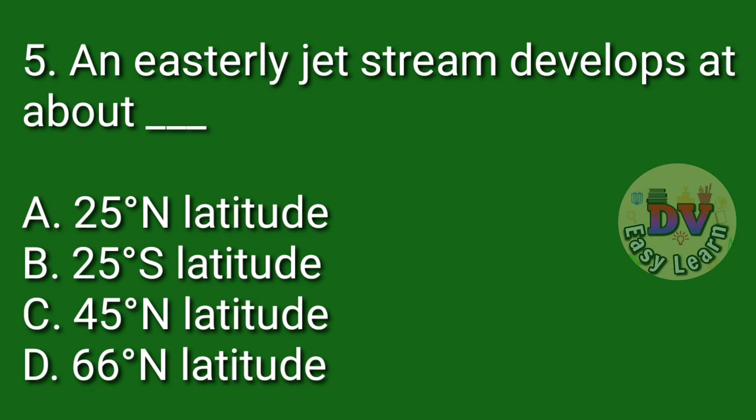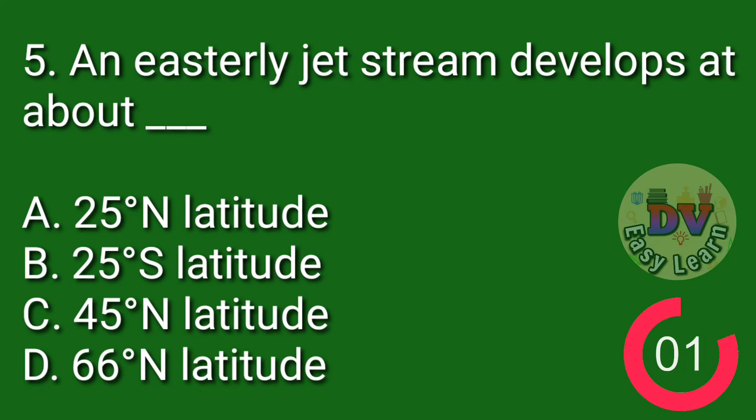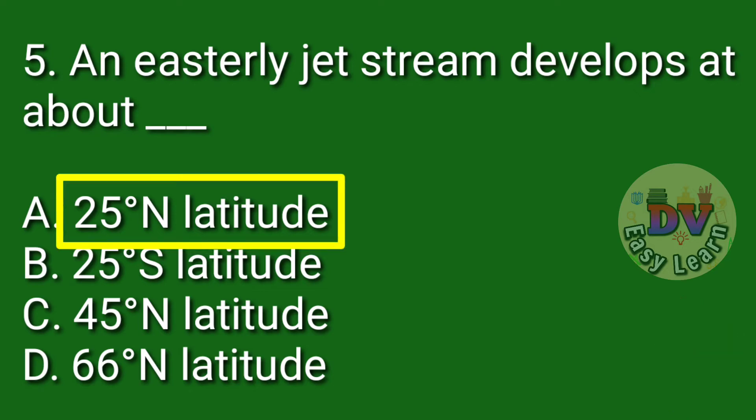Question number 5. An easterly jet stream develops at about — Correct answer: 25 degrees northern latitude.